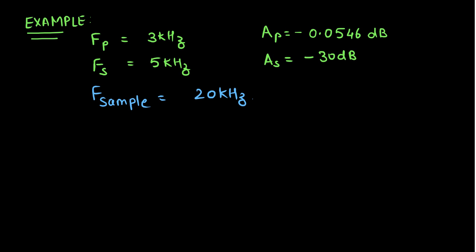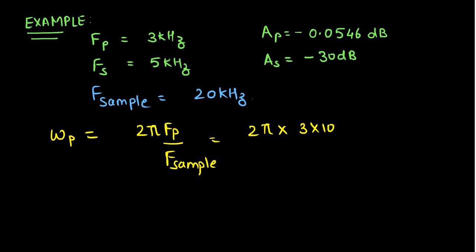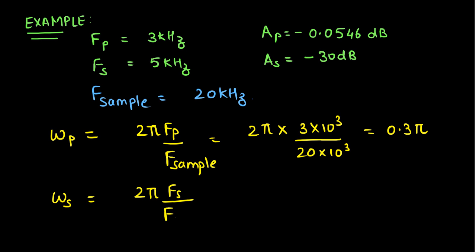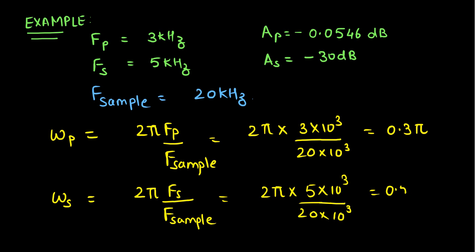To design a digital filter, we first convert analog frequencies to digital frequencies using the formula: omega_P equals 2*pi*Fp divided by Fsample, which equals 2*pi times 3×10³ divided by 20×10³, giving 0.3*pi. The stopband edge in the digital domain is omega_S equals 2*pi*Fs divided by Fsample, which equals 2*pi times 5×10³ divided by 20×10³, giving 0.5*pi.